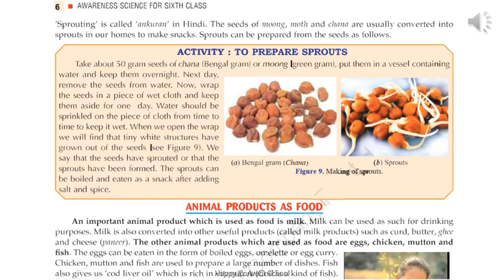In places like Rajasthan, we find camel and goat, and there people drink the milk of camel and goat also. From milk, we can make many useful products called milk products. Milk products are the things which are made out of milk, such as curd, butter, ghee, and cheese.